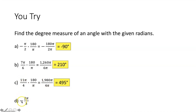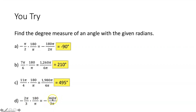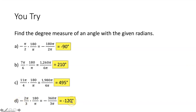Part d, we want to convert negative 2π over 3 radians to degrees. We multiply by 180 over π. The π's cancel, and 360 divided by 3 gives you 120. Therefore, negative 2π over 3 radians is equivalent to negative 120 degrees.